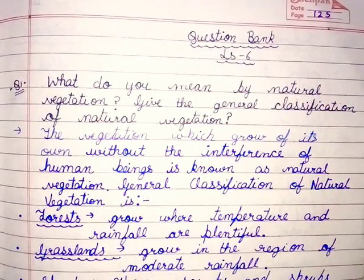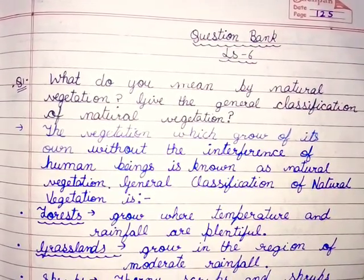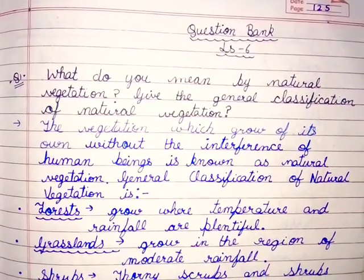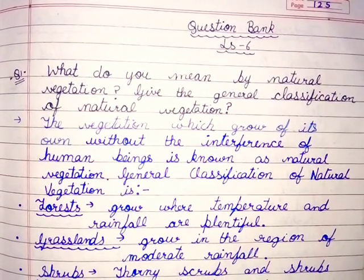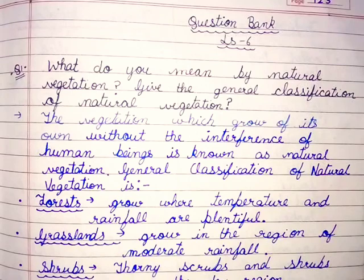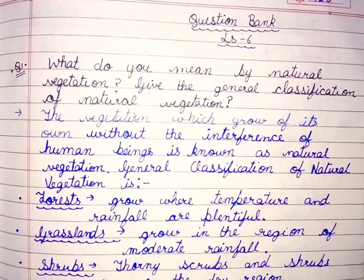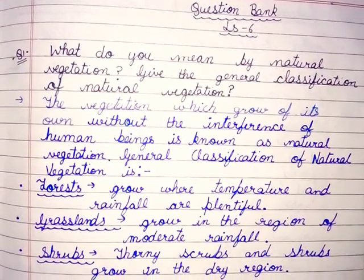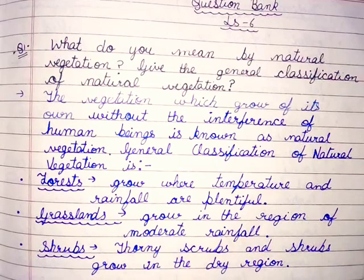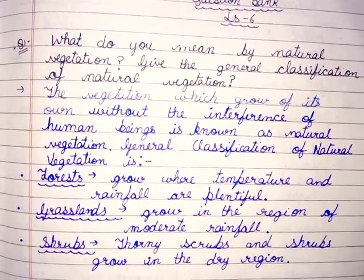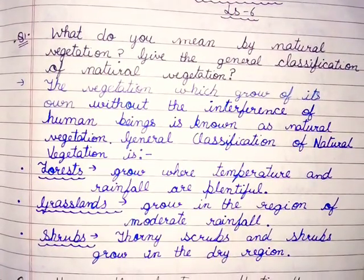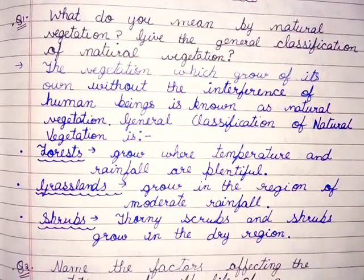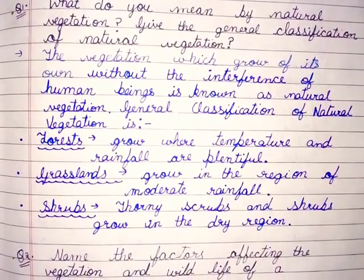Give the general classification of natural vegetation. The vegetation which grows of its own without the interference of human beings is known as natural vegetation. General classification of natural vegetation is: forests, which grow where temperature and rainfall are plentiful; grasslands, which grow in the region of moderate rainfall; and shrubs — thorny scrubs and shrubs grow in the dry region.